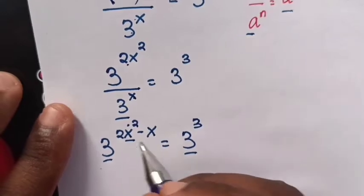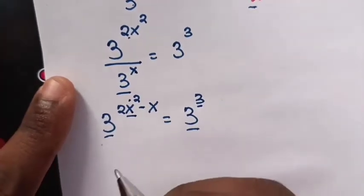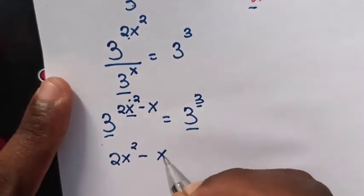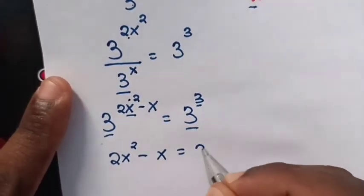Now these are the same bases, so we compare the powers. So it will be 2x square minus x equals 3.